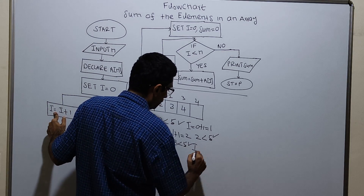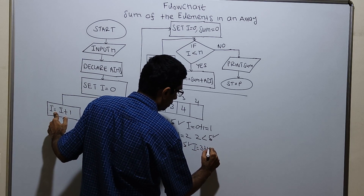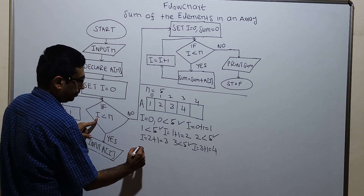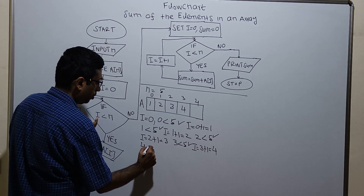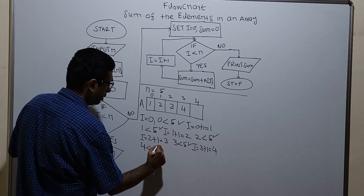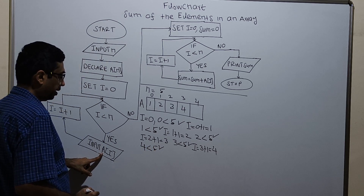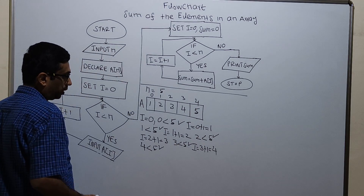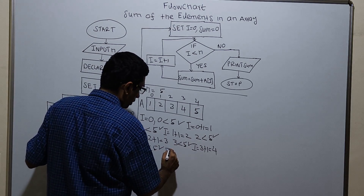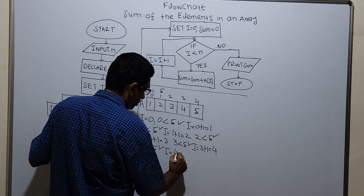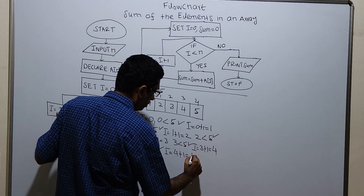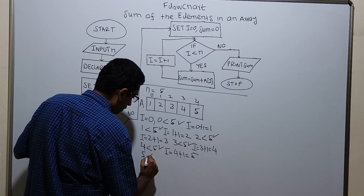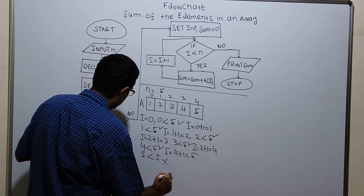i equal to existing value of i equal to 3. 3 plus 1 which is equal to 4. I am checking the condition i less than n: 4 less than 5, the condition is true. Input a of 4. I am storing a value 5. i equal to i plus 1. i equal to 4 plus 1 which is equal to 5. Checking condition: 5 less than 5 is false.